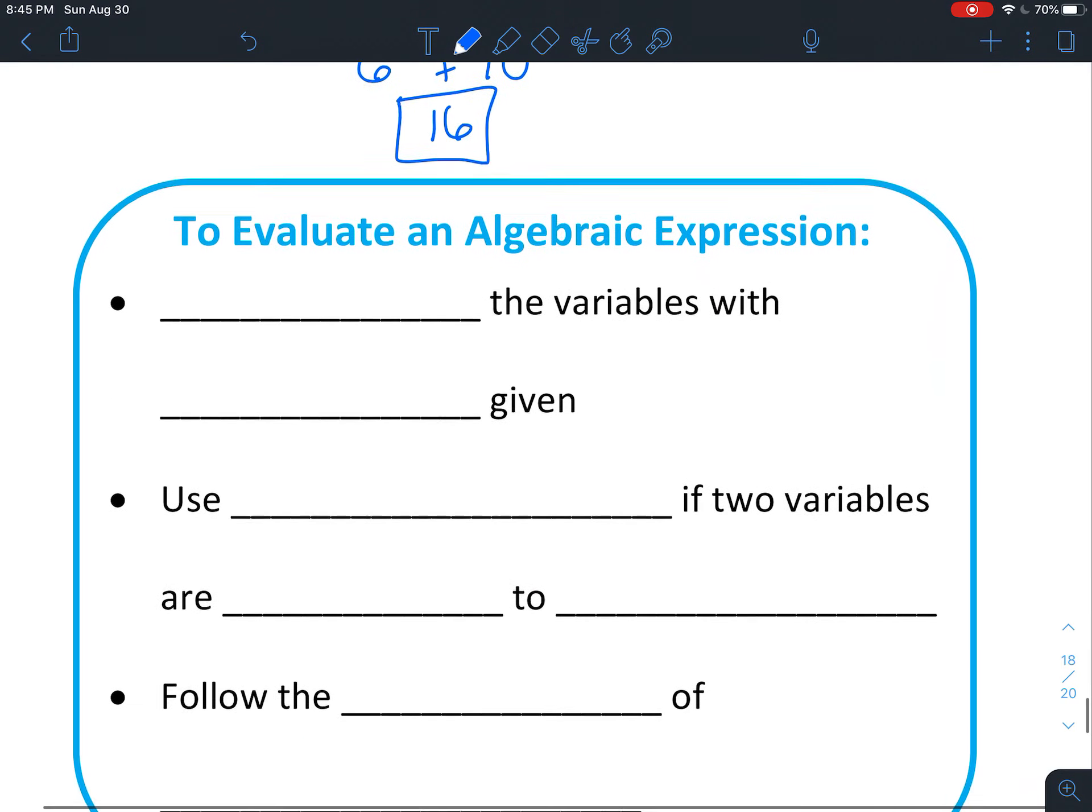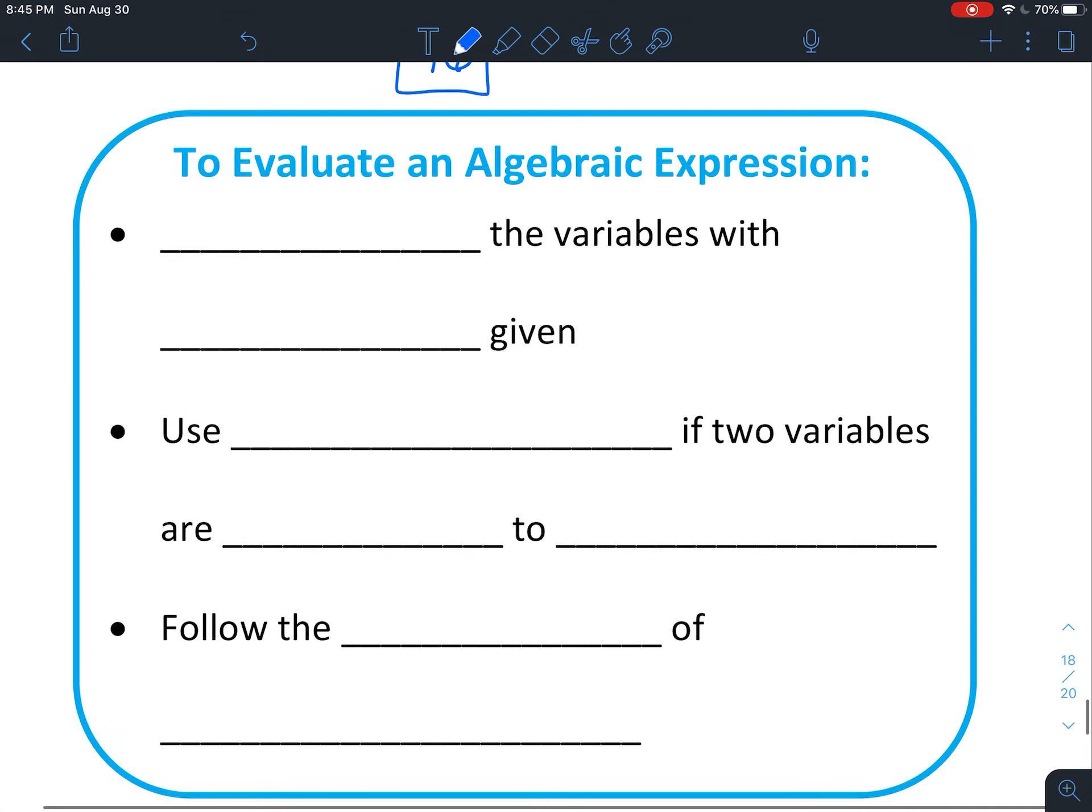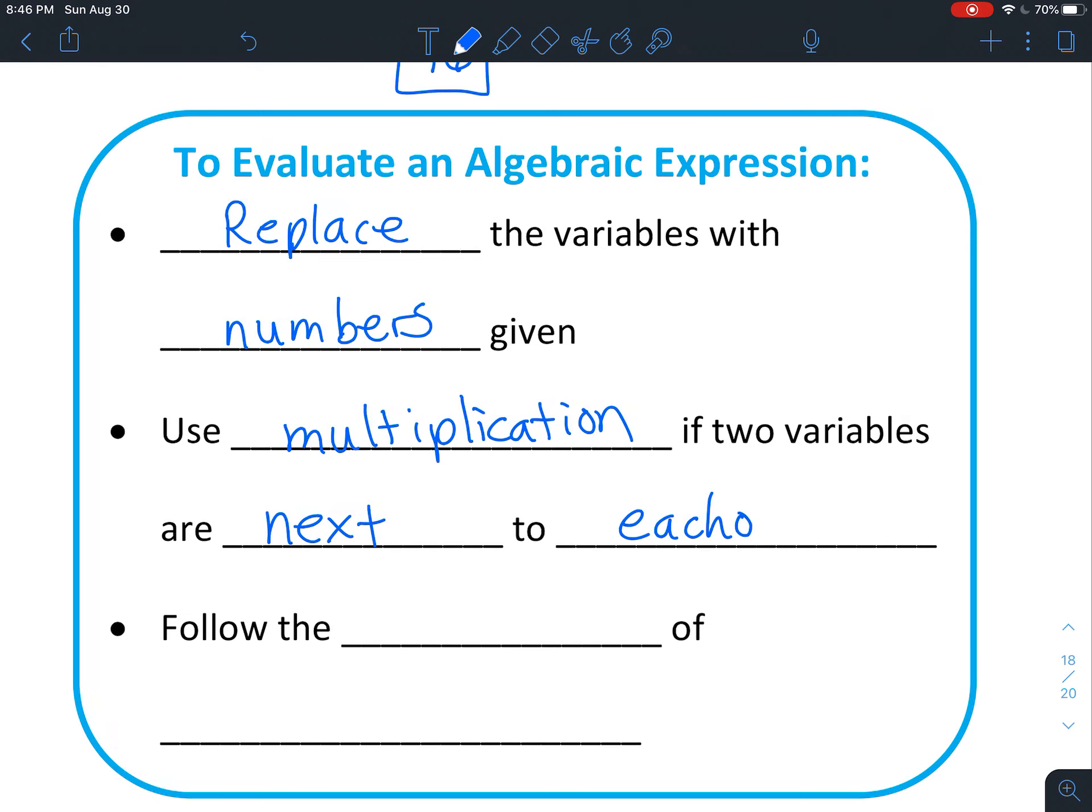Okay, so here's the steps of what we just did. Any time you evaluate an algebraic expression, you're going to replace the variables with numbers that you're given. Use multiplication if the two variables are next to each other.